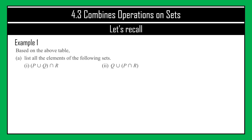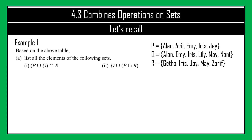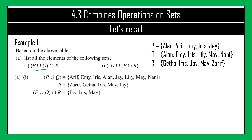Let's start with question A. Question A number 1 is (P union Q) intersect R. For any combined operation, always solve the bracket first. P union Q means everything in P and everything in Q: Arif, Amy, Iris, Alan, Jay, Lily, May, and Nani. For R, we have Zarif, Gita, Iris, May, and Jay.